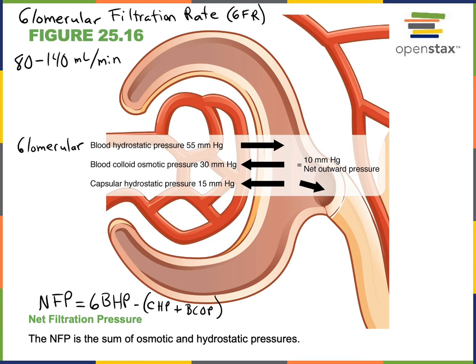In this example, if the glomerular blood hydrostatic pressure is 55 mmHg, and we subtract 30 mmHg of blood colloidal osmotic pressure and 15 mmHg of capsular hydrostatic pressure, that's 55 minus 45, giving us a net filtration pressure equal to 10 mmHg.